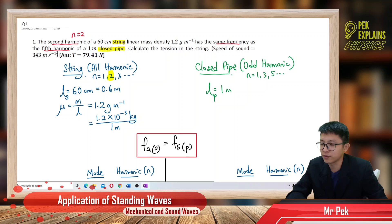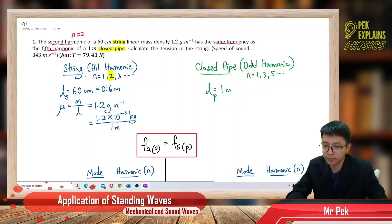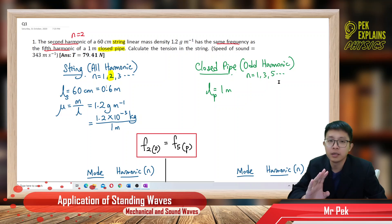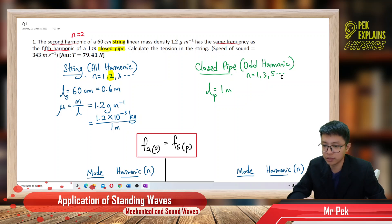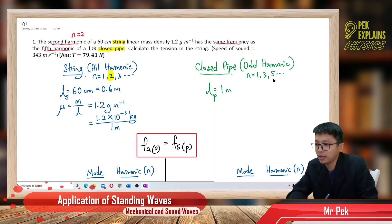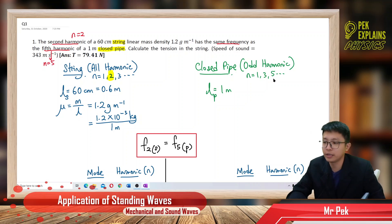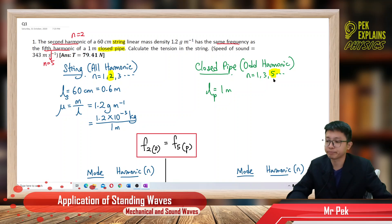The closed pipe is odd harmonic, meaning the harmonic only has odd numbers. So the fifth harmonic means N = 5. We substitute N equal to 5 for the closed pipe.